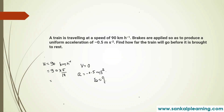The initial speed is 90 kilometer per hour. Converting to meter per second: 90 into 5 divided by 18 gives 25 meter per second. When the brakes are applied, the final velocity will be zero. Acceleration is minus 0.5 meter per second square. We have V, A, and U, so we can calculate the distance traveled.